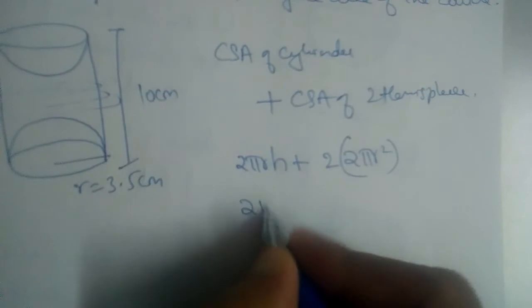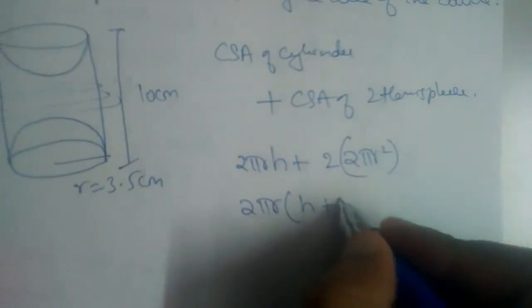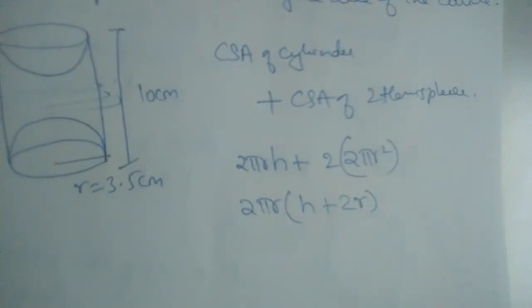So what can we take common from here? 2πr common. So it will be h plus, if you take 2πr here, 2r will be left.